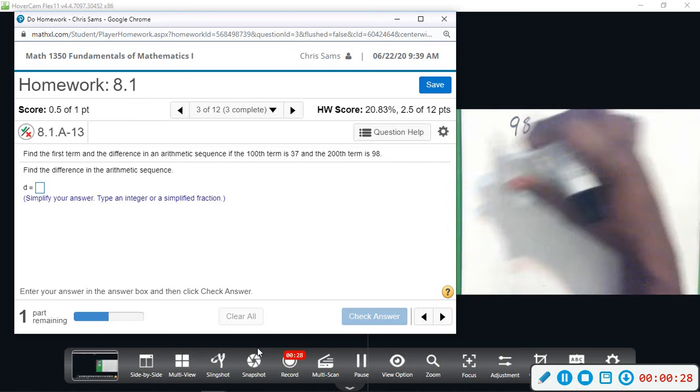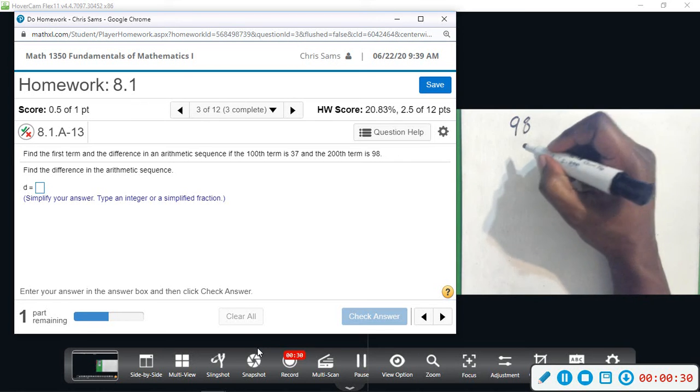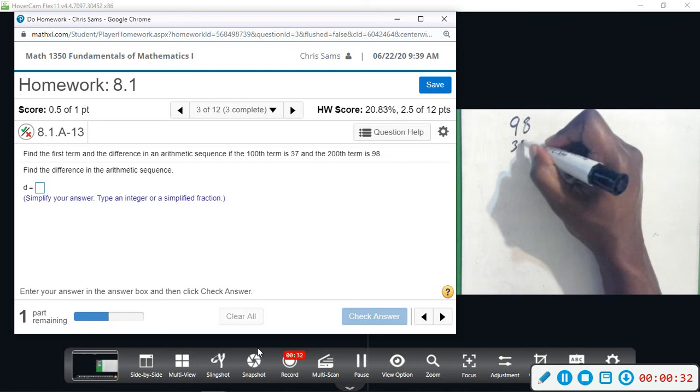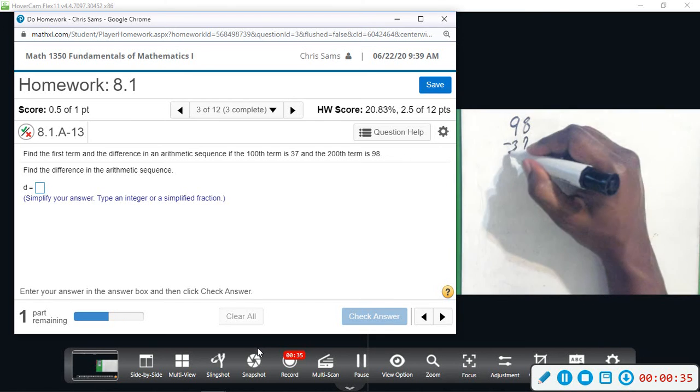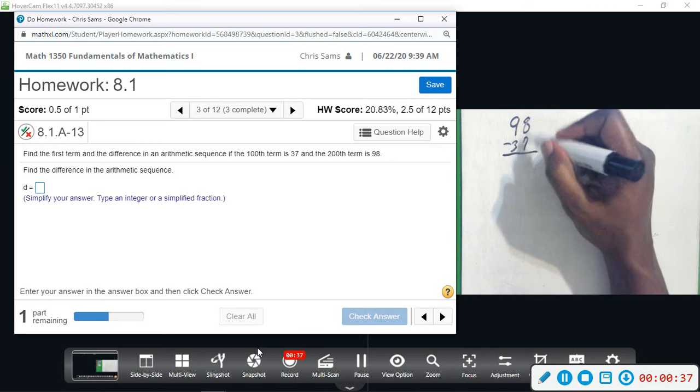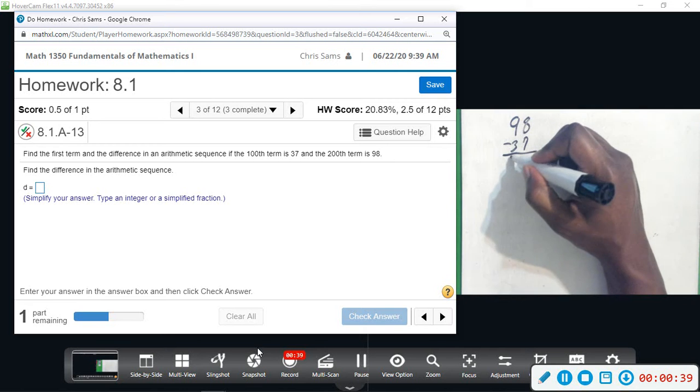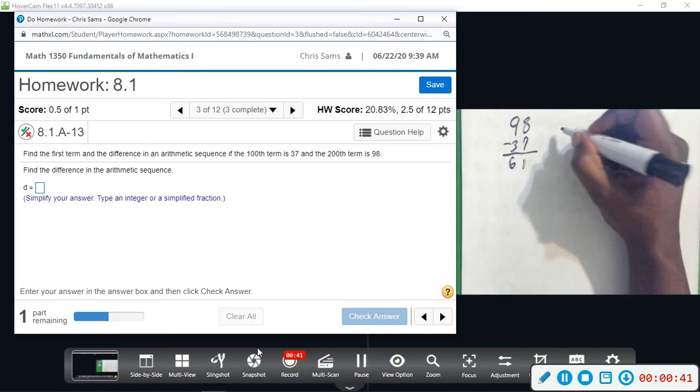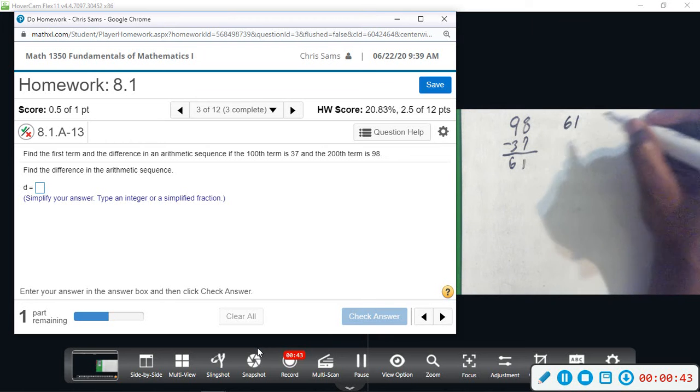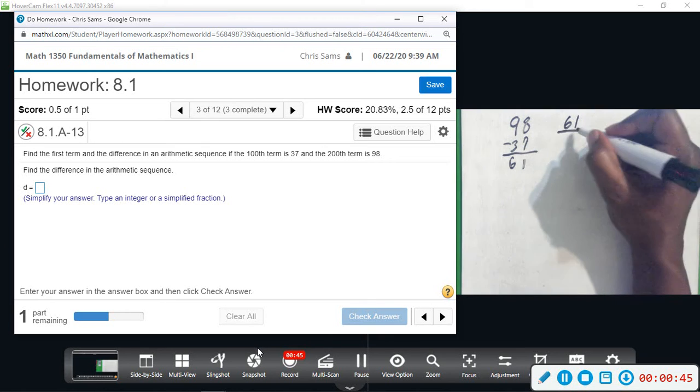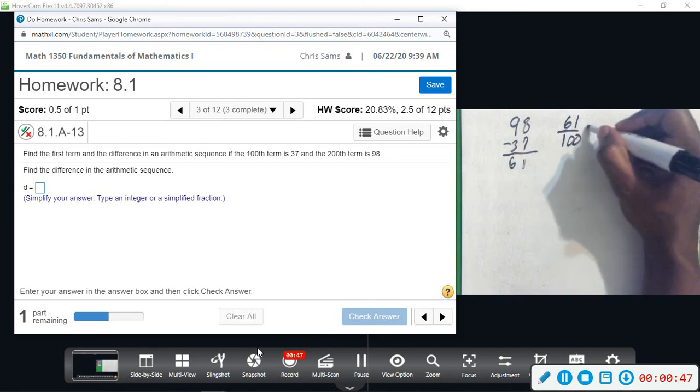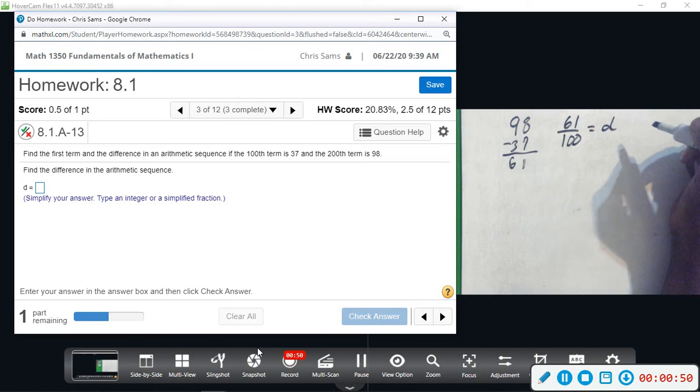We'll divide by the number of terms, and that gives us the average difference. So 98 minus 37 equals 61, and then 200 minus 100 gives us 100 terms. So our difference is 61 divided by 100.